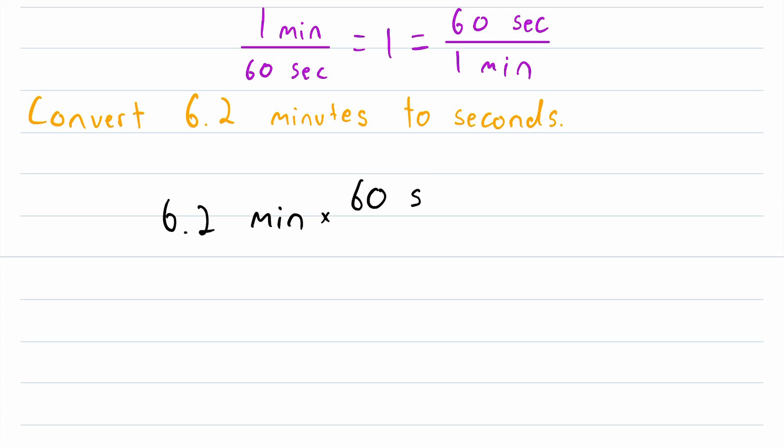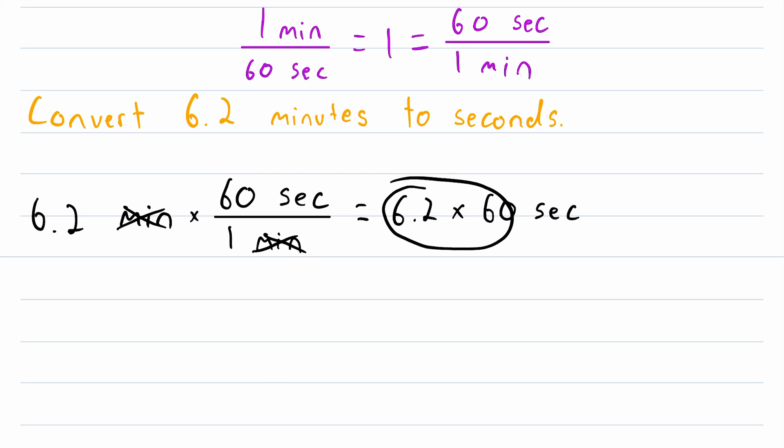We multiply by 60 seconds. And this is getting divided by one minute. And just like before, we have a minutes unit being divided by a minutes unit. So those units will cancel out. So over here, we're left with 60 seconds divided by one, which is just equal to 60 seconds. So this is equal to 6.2 multiplied by 60 seconds. 6.2 times 60 is equal to 372. So our final answer is 372 seconds.